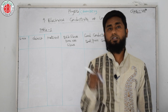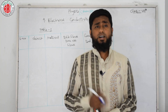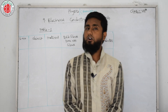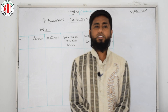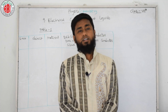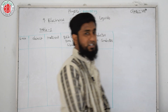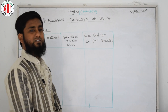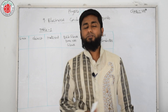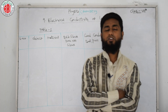In earlier classes, you have learned that electric current can pass easily through metals like copper, aluminium, etc. Do you recall some metals which conduct electric current? Let us revisit the activity and do it now. Activity number one: testing materials to know which allows electric current to pass through it. We have already seen that metals like copper and aluminium conduct current.